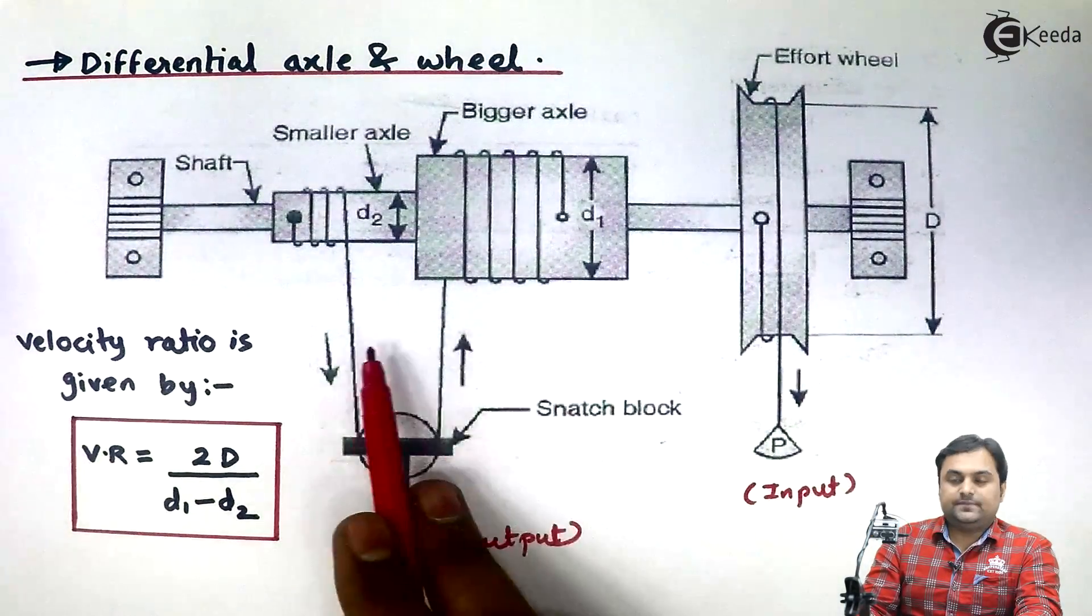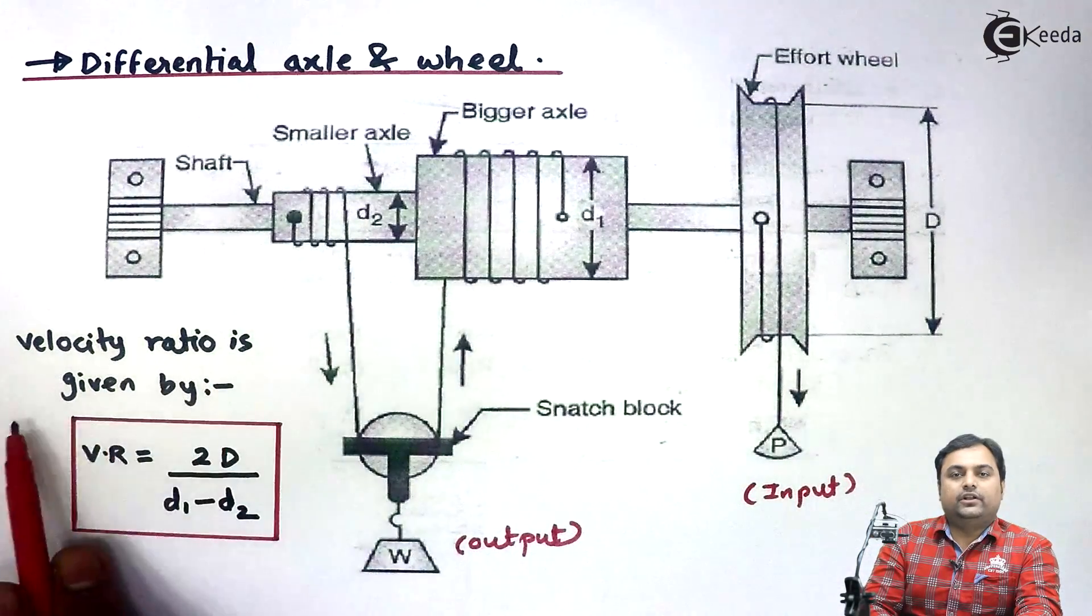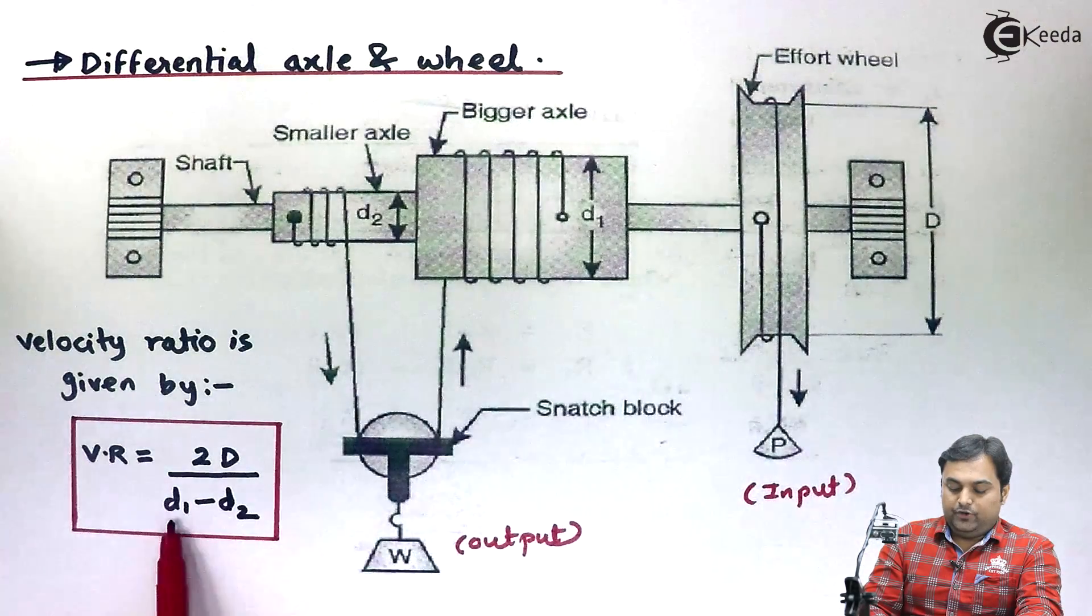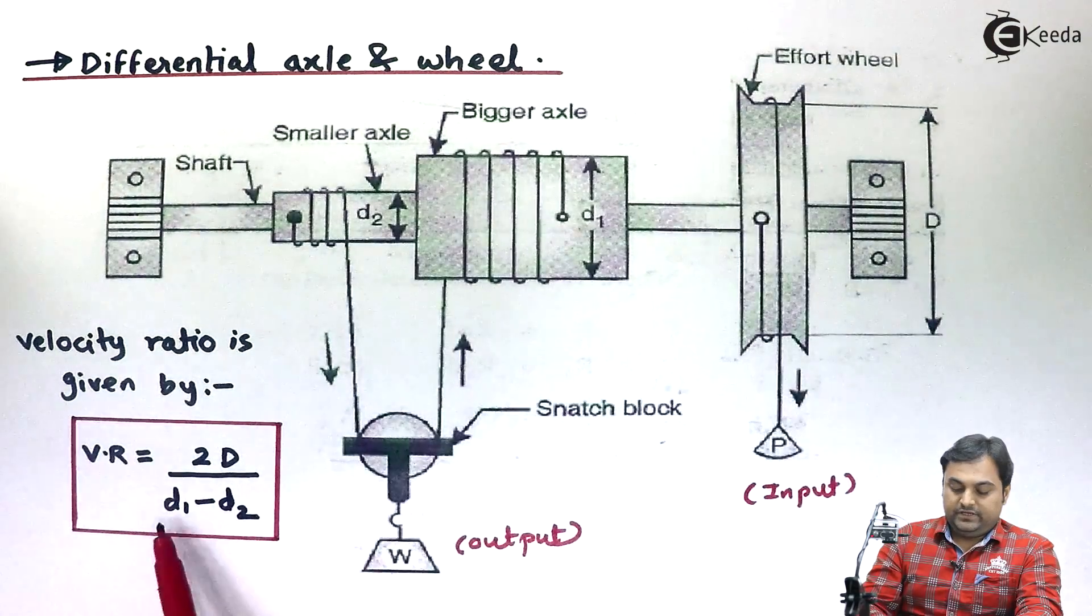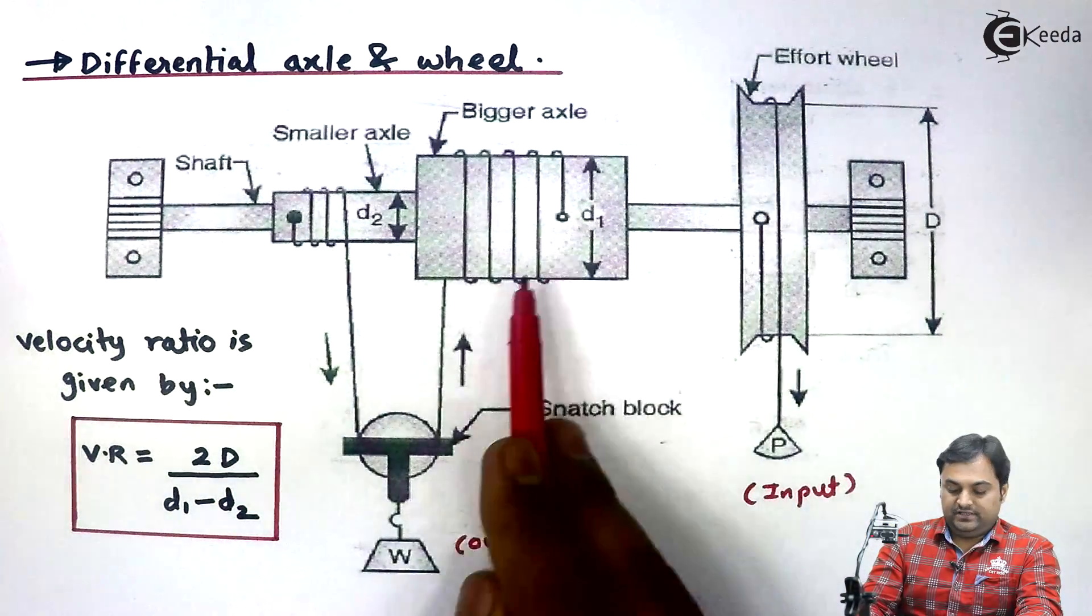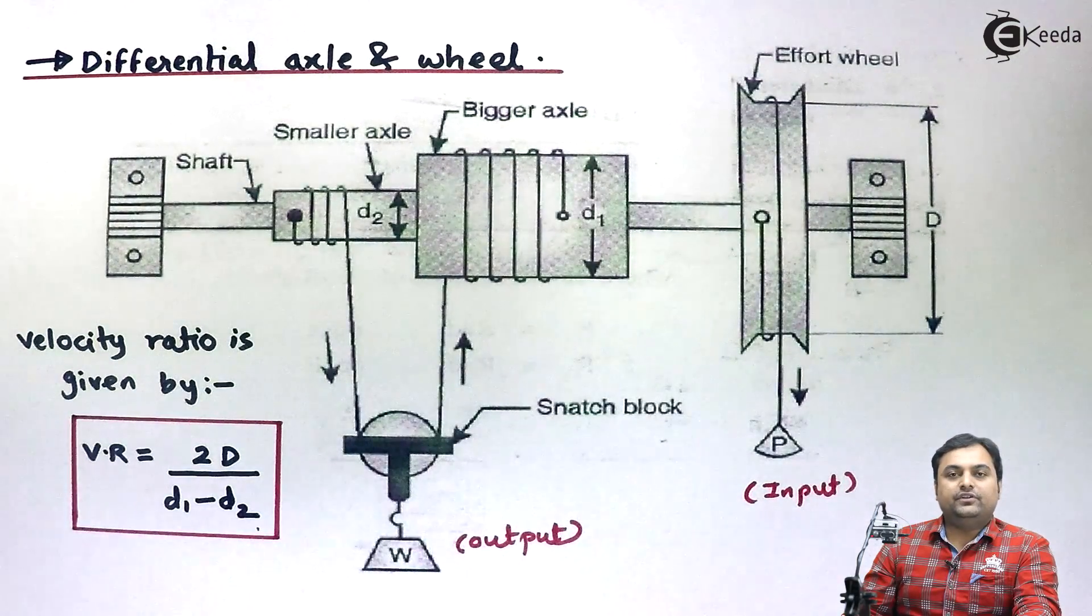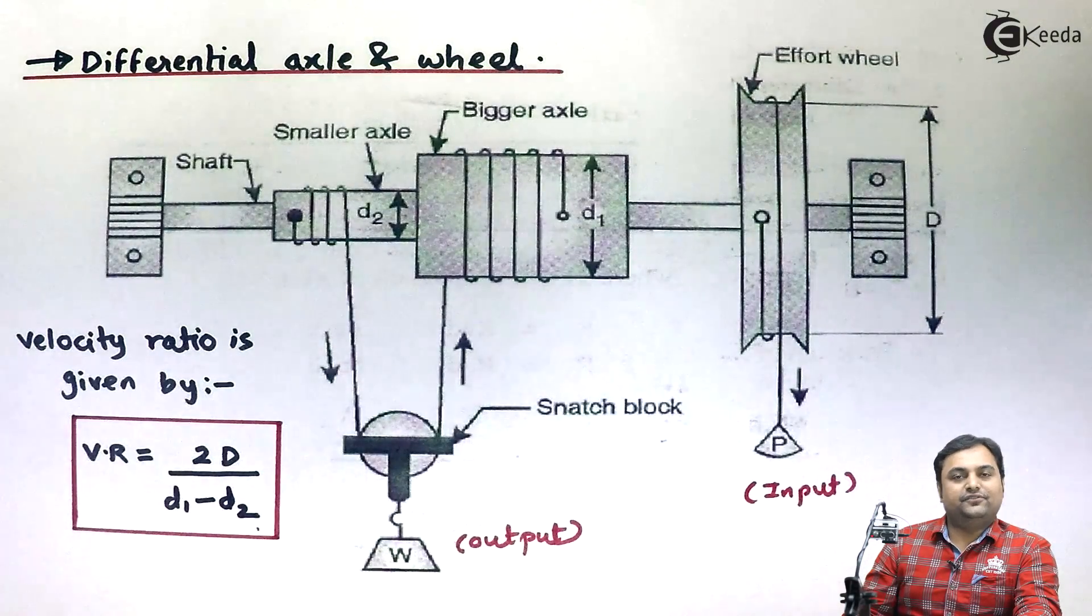This is the explanation of differential axle and wheel. Here we can calculate velocity ratio by using the formula 2D upon d1 minus d2, where capital D is the diameter of effort wheel, d1 is the diameter of bigger axle, and d2 is the diameter of smaller axle. So in this video we have seen construction, working, and velocity ratio formula for differential axle and wheel.